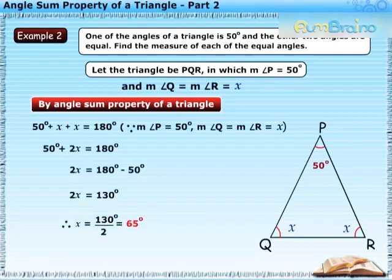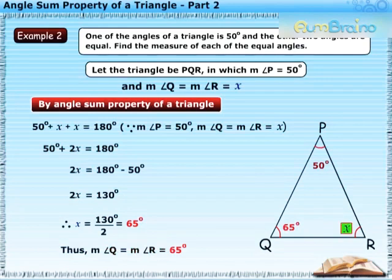Therefore, X is equal to 65 degrees. Thus, measure of angle Q is equal to measure of angle R, which is equal to 65 degrees.